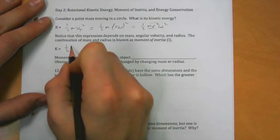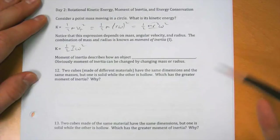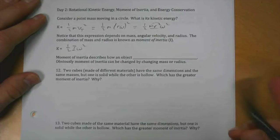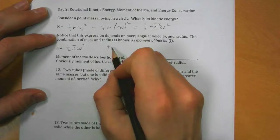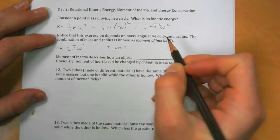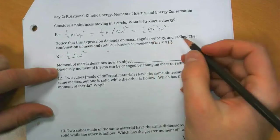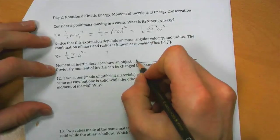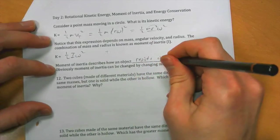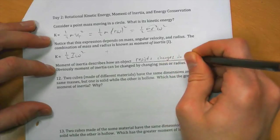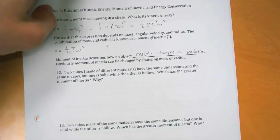And this mr squared for a point mass is something called moment of inertia. So kinetic energy, rotational kinetic energy is equal to one-half I omega squared. It's called moment of inertia. A moment of inertia describes how an object resists changes in rotation.